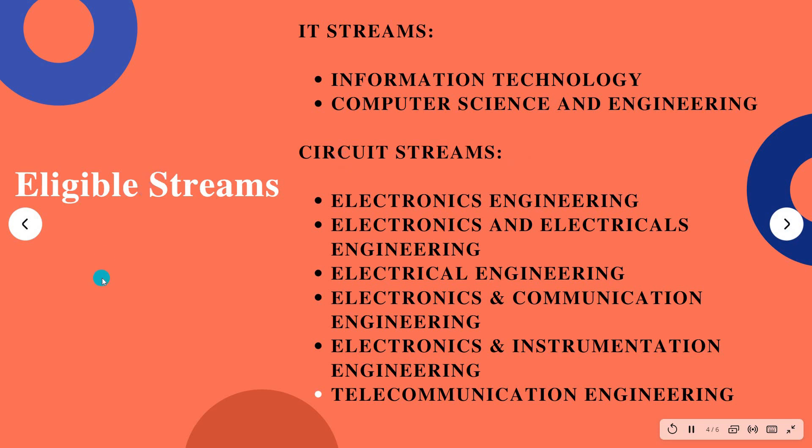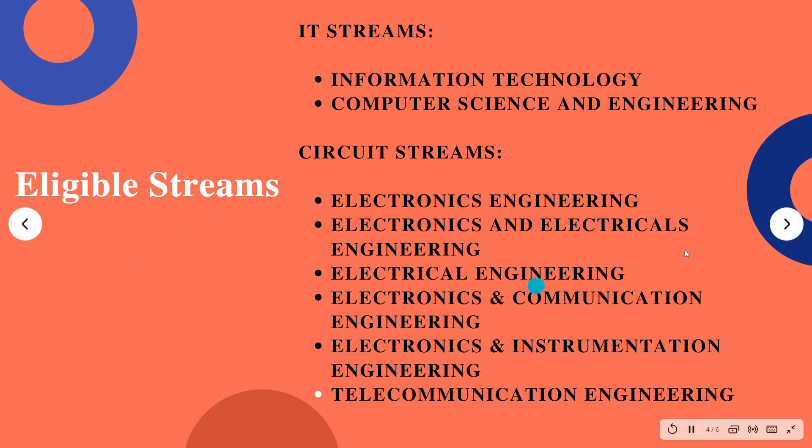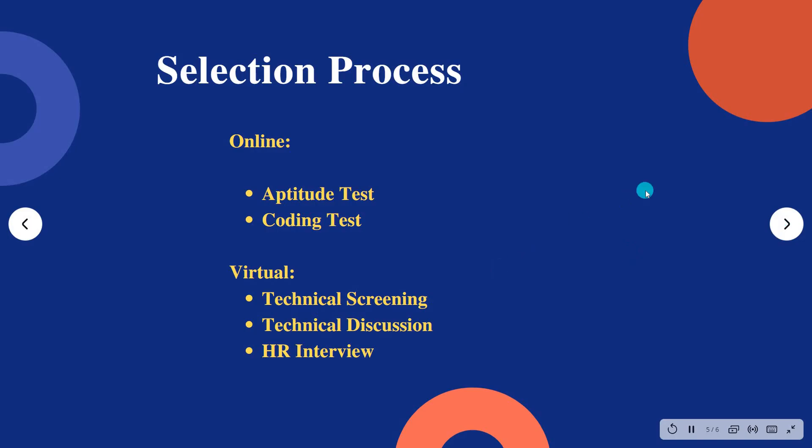The eligible streams include IT streams and circuit streams. For IT streams, you should have done information technology or computer science and engineering. Circuit streams include electronics engineering, electronics and electrical engineering, electrical electronics and communication engineering, instrumentation, and telecommunication engineering. These are all the branches eligible to apply.